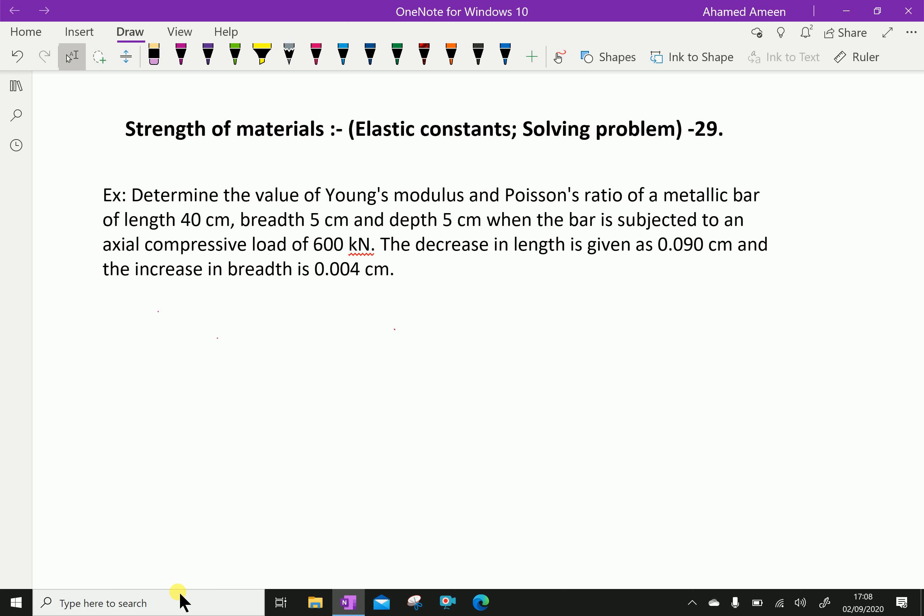Now, given things: length of the bar is 40 cm, breadth is 5 cm, depth also 5 cm. When the bar is subjected to an axial compressive load, P equals 600 into 1000 N.